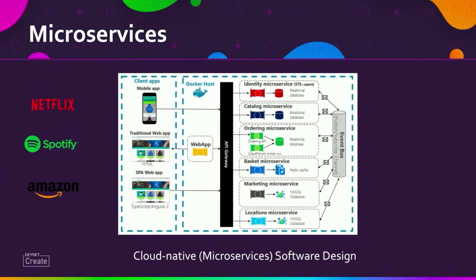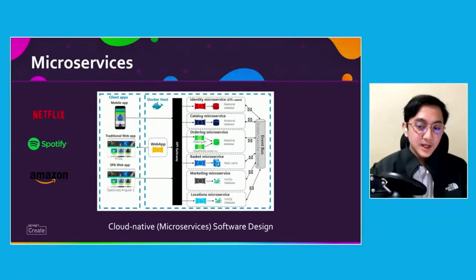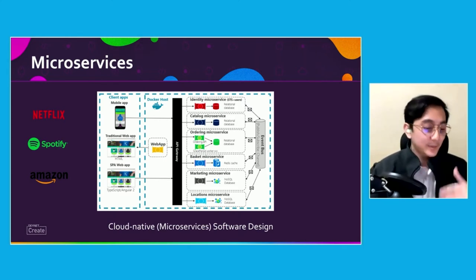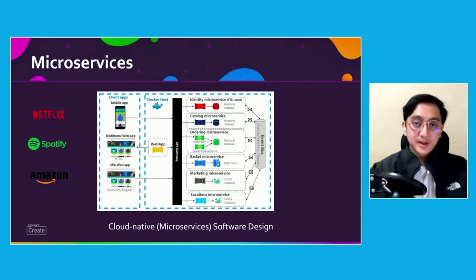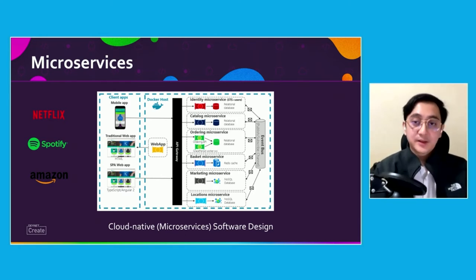Teams would typically work only on specific microservices — say catalog or ordering — and since the application is decomposed, they don't necessarily have to think about the whole big application. This makes the application less complex and less prone to error. Most importantly, the application takes advantage of cloud platforms through scalability — microservices can be scattered across different deployments or have more replicas — as well as availability and resiliency, because container orchestration always ensures a specific number of running replicas.